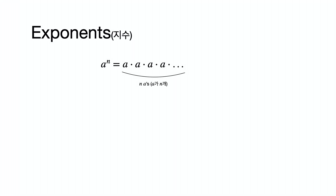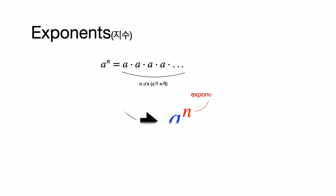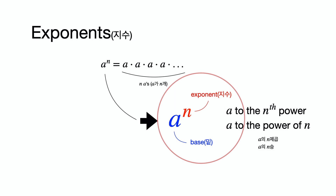Let's start with exponents first. When the number a is multiplied n times, it can be simply written in the compact form, and it reads as 'a to the nth power' or 'a to the power of n.' Here, a is called the base and n is called the exponent.